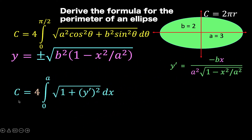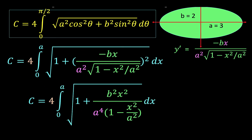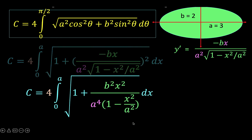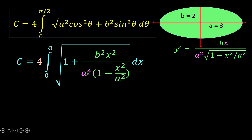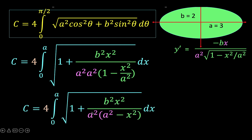Substituting y prime back into the arc length formula, we square the y prime expression: negative b squared becomes positive b squared, x squared remains x squared, a squared squared becomes a to the fourth, and the square root and exponent two cancel for the 1 minus x squared over a squared term. We then split a to the fourth into a squared times a squared and distribute one a squared, so that after cancellation we have a squared minus x squared in the numerator under the radical.